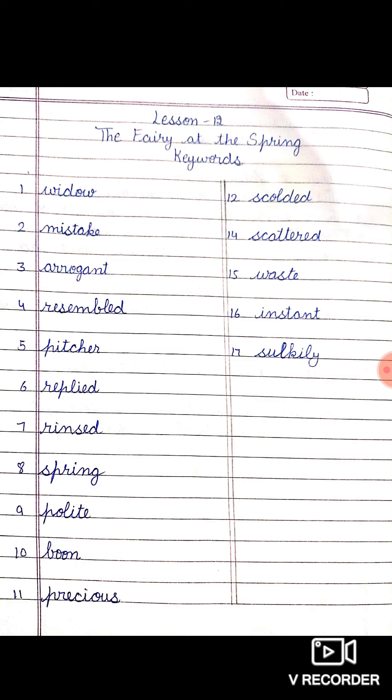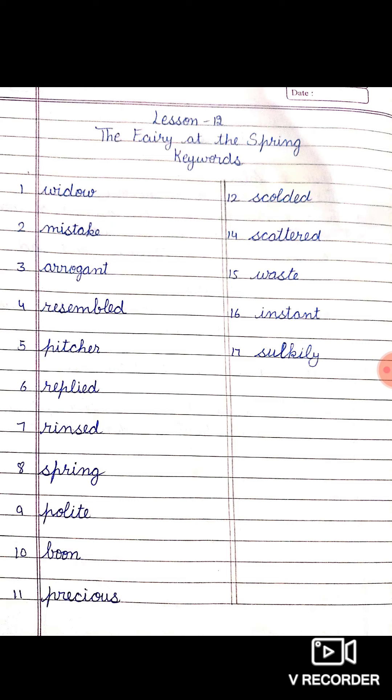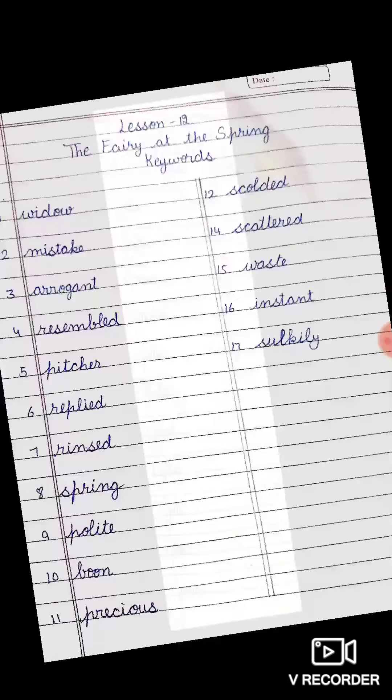Next is rinsed. The pretty girl rinsed the pitcher and brought water for the old lady. Next is polite. Polite means kind and humble. Next is boon. This is the boon I grant you: with every word that you utter, there shall fall from your mouth either a flower or a precious stone. Next, precious means valuable.